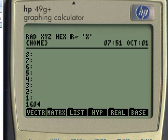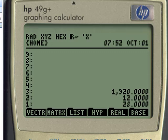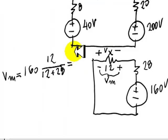160, enter, 12, multiply, 12, enter, 28, enter, addition, division, 48, 48 volts, 48 volts. So Vm is 48 volts.